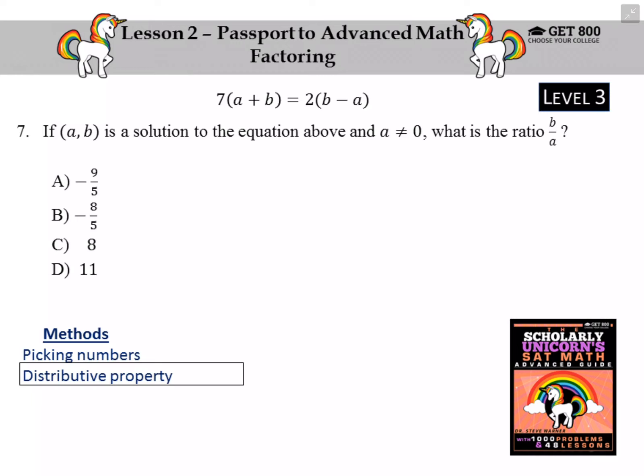I'm going to begin by using the distributive property twice, once on the left and once on the right. So first we'll distribute that 7 to A and B to get 7A plus 7B. And we'll distribute the 2 on the right-hand side of the equation to get 2B minus 2A.